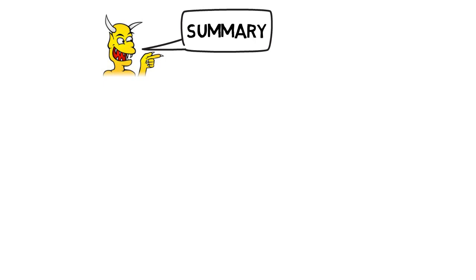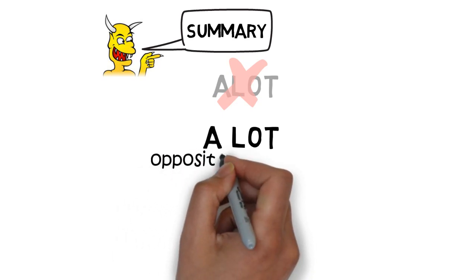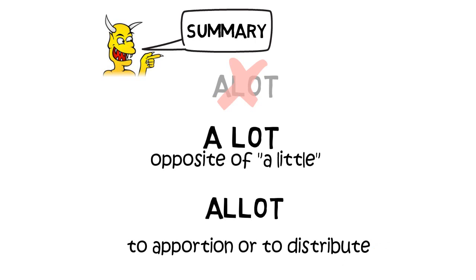So that's it. Let's have a quick summary. Alot without a space — that's a spelling mistake, unless you're talking about the Indian town. Next, a lot with a space — think of that as the opposite of a little. And then allot with two L's, the verb, to mean to apportion or to distribute.